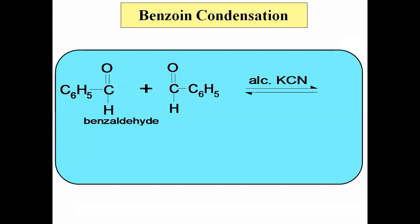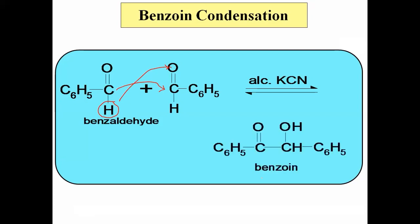One molecule of benzaldehyde adds to the carbonyl group of the second molecule. Here, the hydrogen atom adds to the oxygen of that second molecule. And the remaining part adds to the carbonyl carbon. After addition, we get the product. The other molecule of benzaldehyde provides C₆H₅, and C double bond O is the carbonyl group.